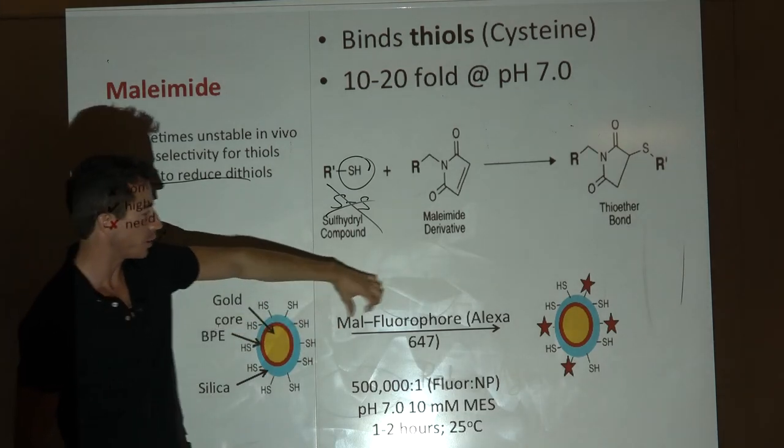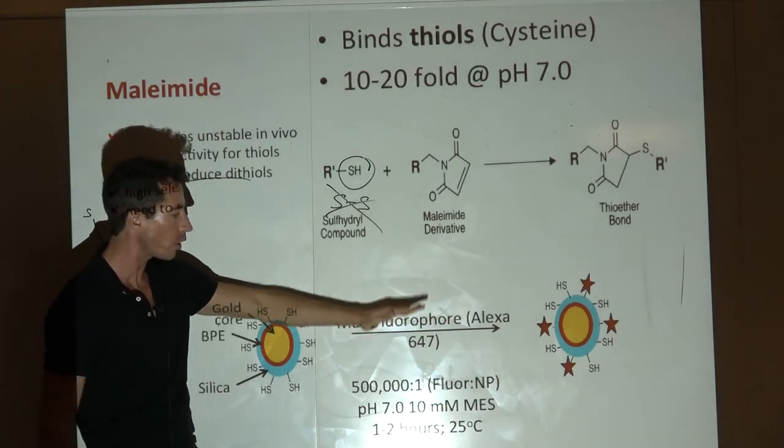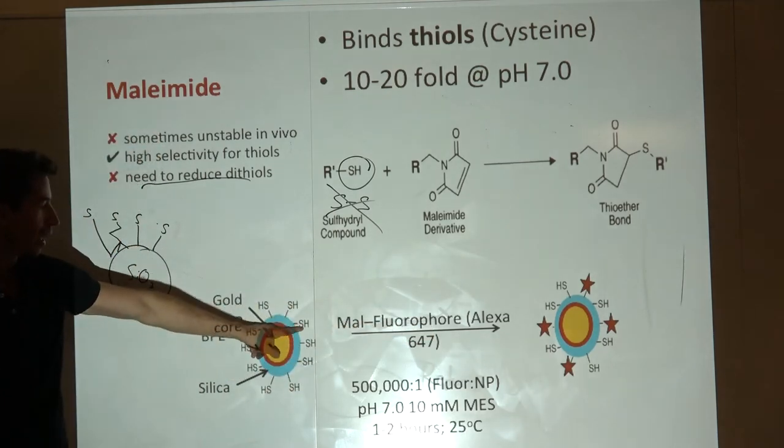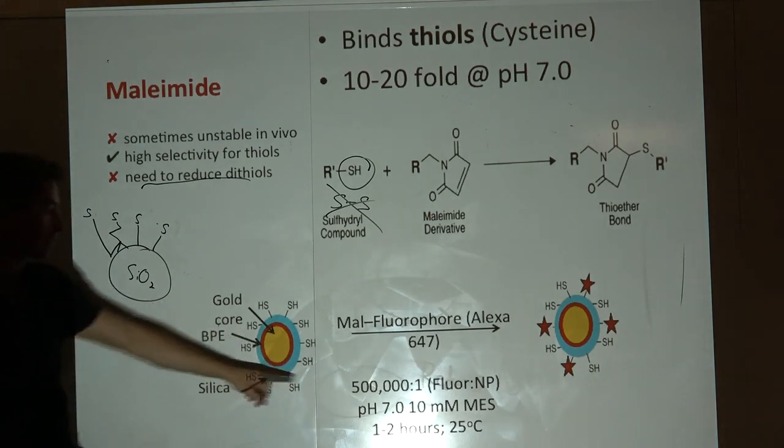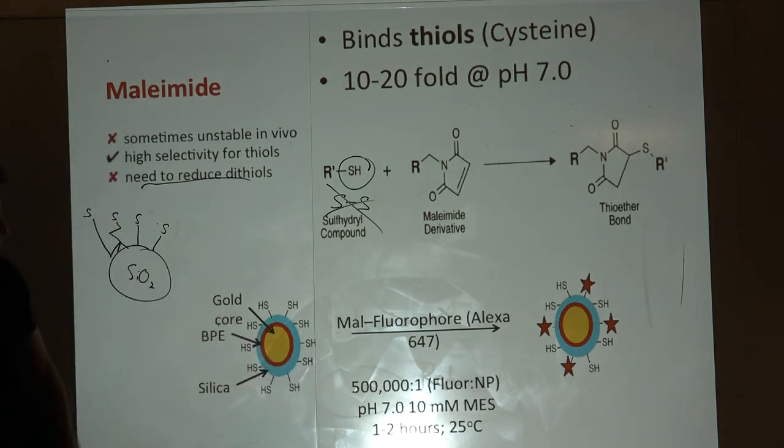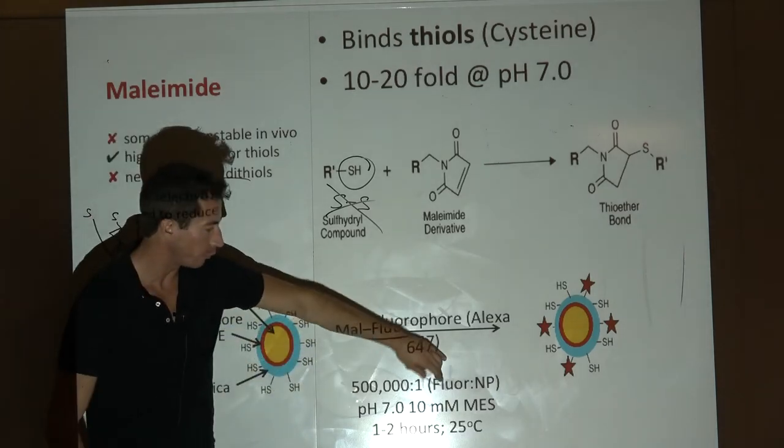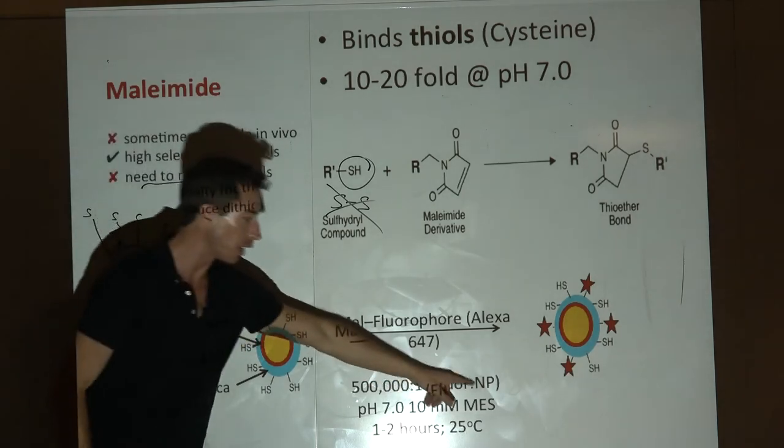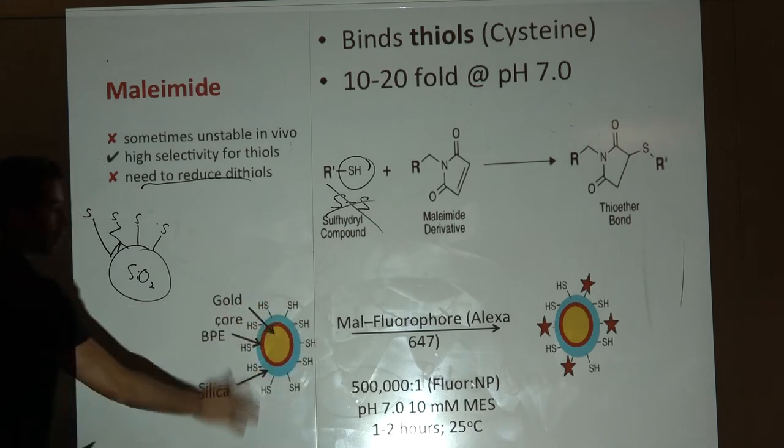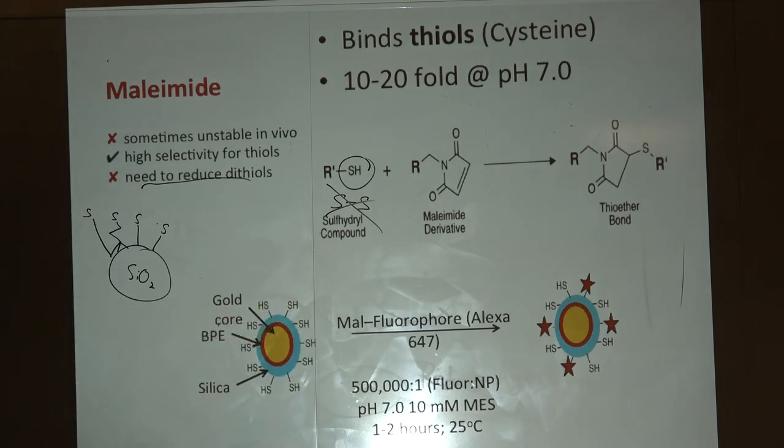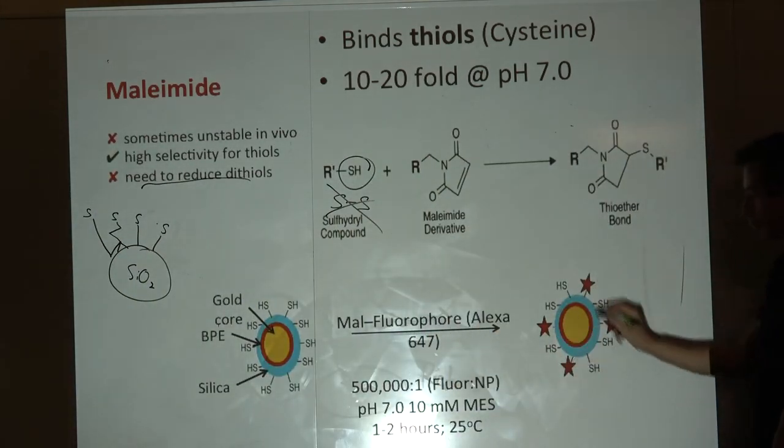One of the first things you need to do is reduce this, because this group is not reactive for dithiols. It has to be a protonated thiol. But that's no big deal - you add in those same reducing agents we talked about before. Again, this is about 10 to 20 fold excess. Not per nanoparticle, per thiol group.